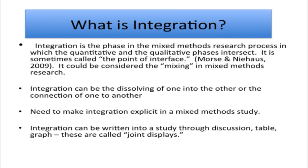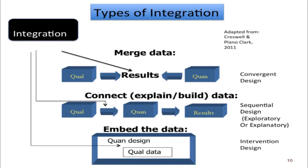Here are the three basic designs. In the convergent design, integration comes when the qualitative and quantitative data are actually combined or merged. In the second case, a sequential design, integration comes between the qualitative and quantitative phase — if it starts qualitatively, you're building to a quantitative phase; if it starts quantitatively, you're explaining that quantitative database with qualitative data. Integration could also be embedded: in an experiment, if you put qualitative data in before the experiment begins, you're embedding it into the experiment in an intervention design.